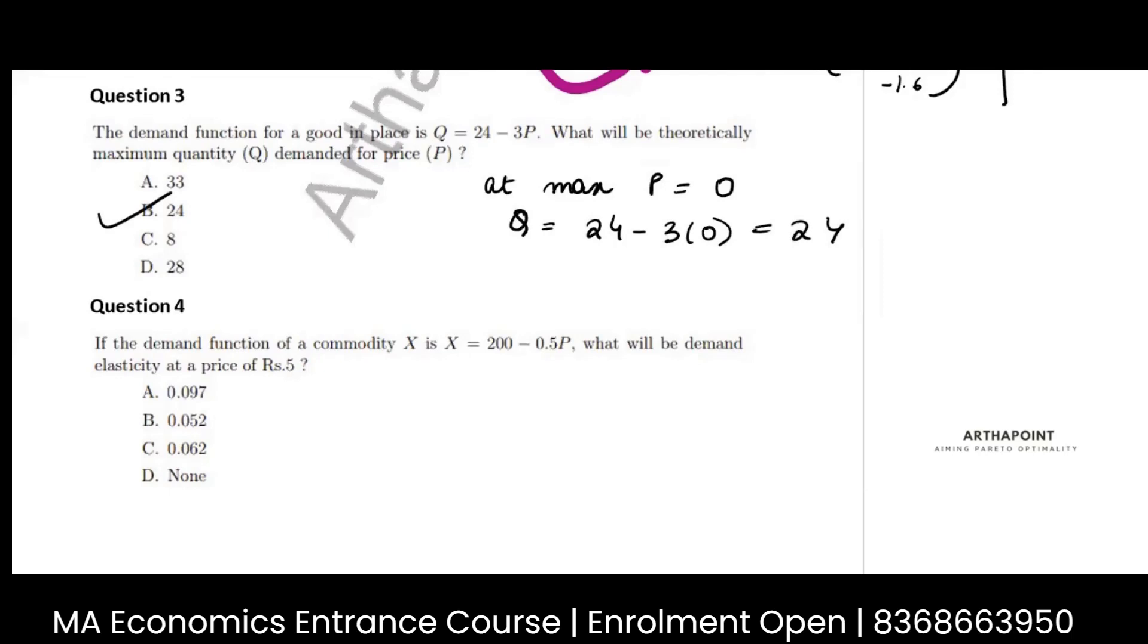This kind of question comes a lot in JNU exam and CVT papers very often. They will just ask you to find the maximum quantity. Don't start differentiating the function and equating it to zero. It just means you have to put price as zero and find what your quantity is.